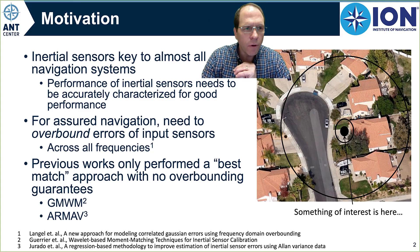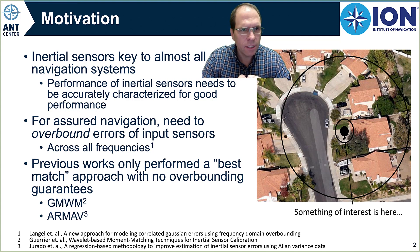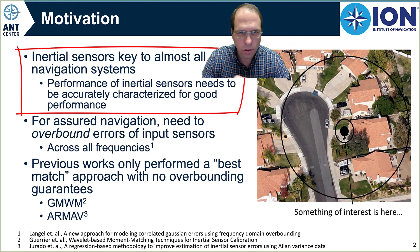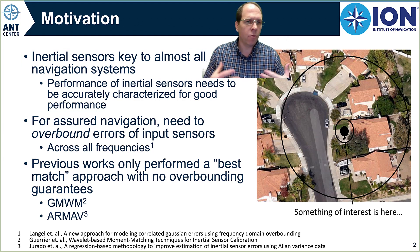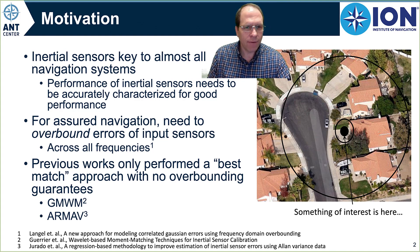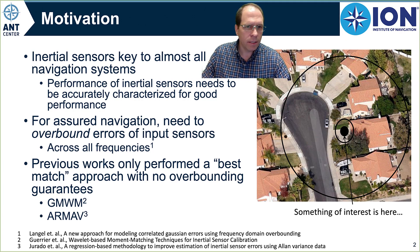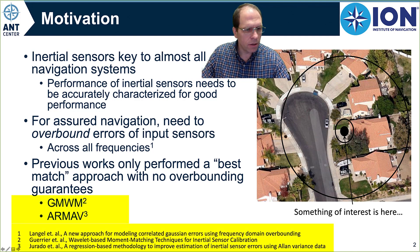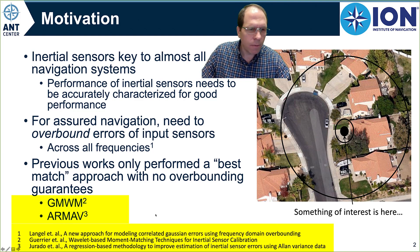So what is the main point behind this paper? This paper looks at two different problems. The first is, inertial sensors are always characterized. They're important to very many navigation systems, but if I'm going to use them in a fusion system, then I have to have some idea of the performance characteristics of those navigation systems. There's been a lot of prior work out there that characterizes how those inertial navigation systems work, and some of these works are shown here at the bottom of the slide. We've got the generalized method of wavelet moments and RMav, two great papers which we built off of in this paper.